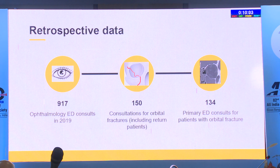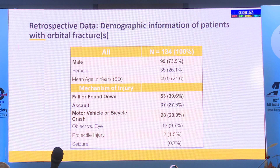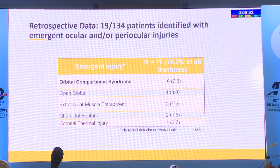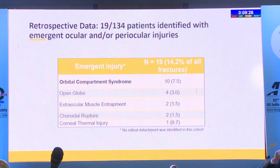Narrowed down to 134 primary consults for patients with orbital fracture. Mostly male, average age about 50, with bicycle and motor vehicle crashes most common mechanisms. Of 134 patients, only 19 identified with emergent ocular or periocular injuries: orbital compartment syndrome most common, then open globes, muscle entrapment, rupture, and thermal injuries. No retinal detachments were identified in this cohort.